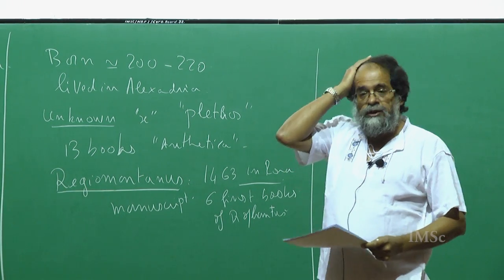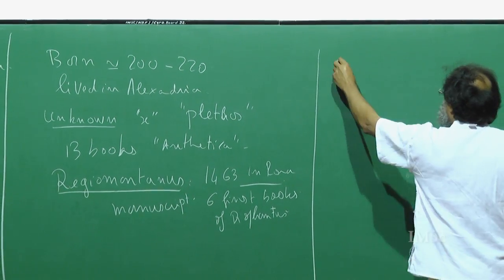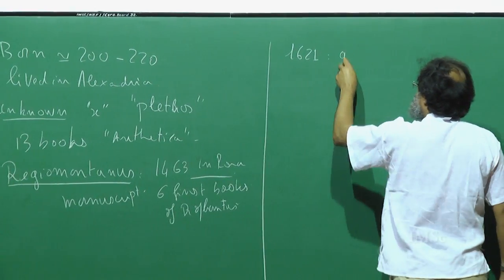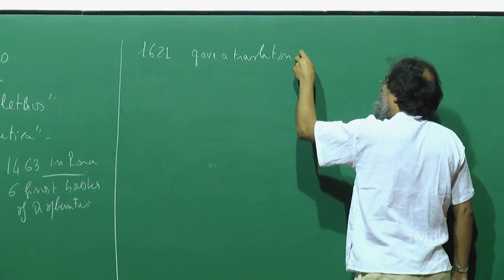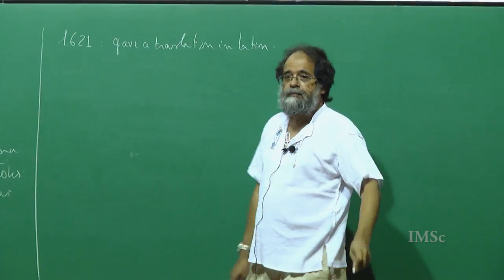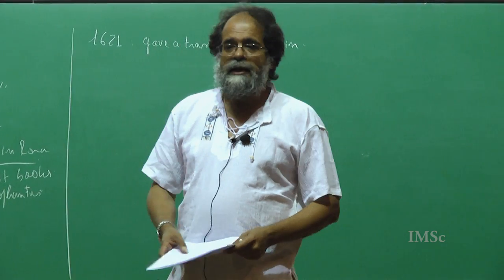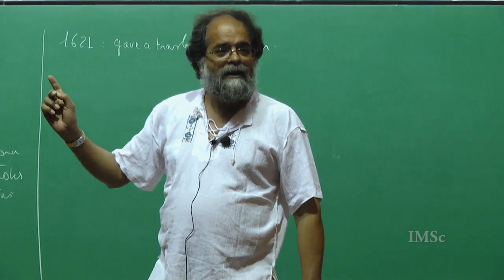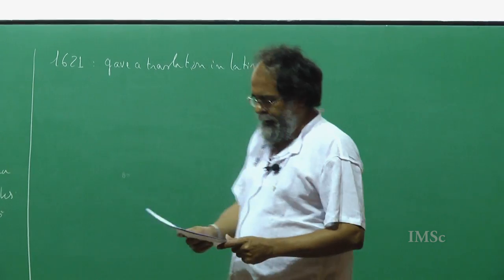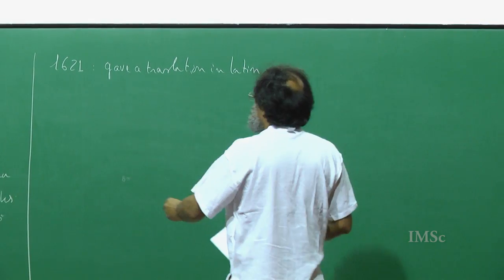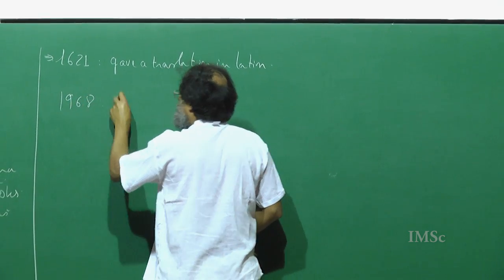These books were later translated by Bachet, a French mathematician, and in 1621 he gave a translation in Latin. This is probably the best known edition of the book of Diophantus and it's precisely the edition on which Fermat wrote down his famous marginal notes about his last theorem, and these are the ones that are really extensively studied.